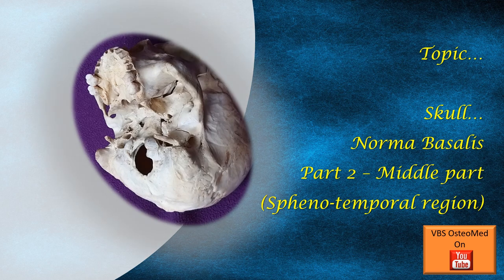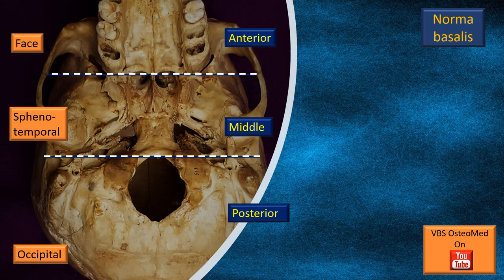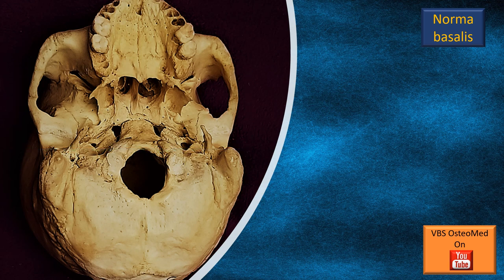The topic for today's discussion is Skull Norma Basalis part 2, that is the middle part, also known as the sphenotemporal region. This is a slide from a previous video where we introduced the concept of Norma Basalis. We divide this view into three regions: an anterior, a middle, and a posterior, also called the face region, sphenotemporal region, and occipital region. For today's discussion we will take up the middle region, that is the sphenotemporal region.